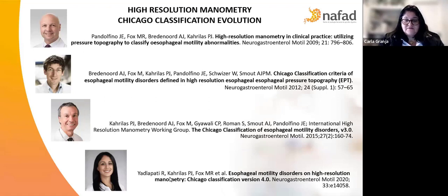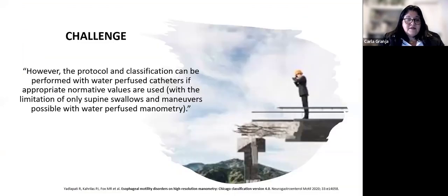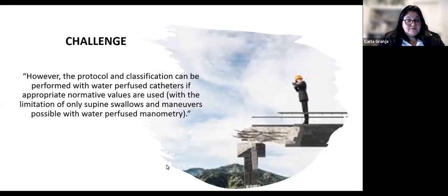As we know, Chicago classification is a classification in evolution. And the last publication, the Chicago classification version 4.0, gives to us the mission to do the exam in a protocol with two positions, supine and upright. But in the article, we can see this phrase: However, the protocol and classification can be performed with water-perfused catheters if appropriate normative values are used, with the limitation of only supine swallows and maneuvers possible with water-perfused manometry. From this publication, we feel again challenged to overcome this barrier.